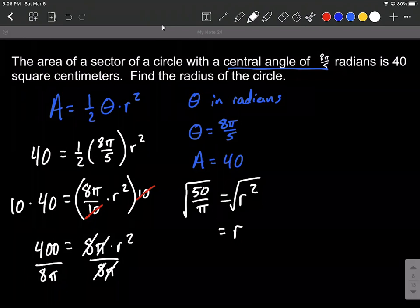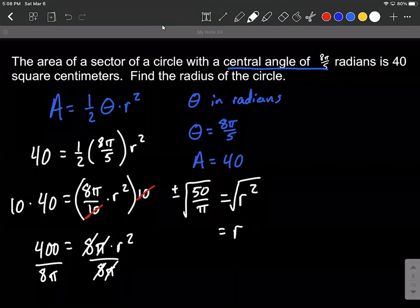Now you may be saying to yourself, why didn't he put a plus and minus? Don't we usually put a plus and minus when we apply a square root to both sides? And I would agree with that. However, our radius has to be positive, because this is a real-life situation. So we are going to have to just keep the positive case.